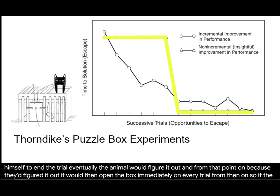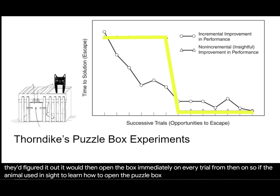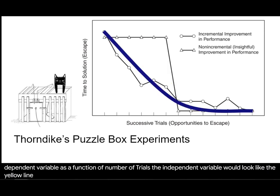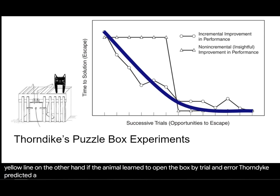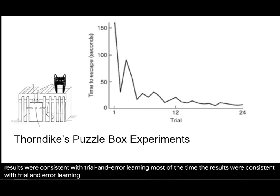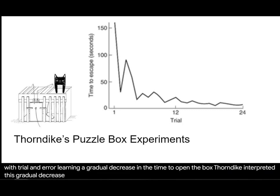So if the animal used insight to learn how to open the puzzle box, the graph of time to open the box — the dependent variable — as a function of number of trials, the independent variable, would look like the yellow line. On the other hand, if the animal learned to open the box by trial and error, Thorndike predicted a gradual change in how long it took the animal to open the box. Most of the time, the results were consistent with trial and error learning: a gradual decrease in the time to open the box. Thorndike interpreted this gradual decrease as a strengthening of the SR, or stimulus-response, connection.